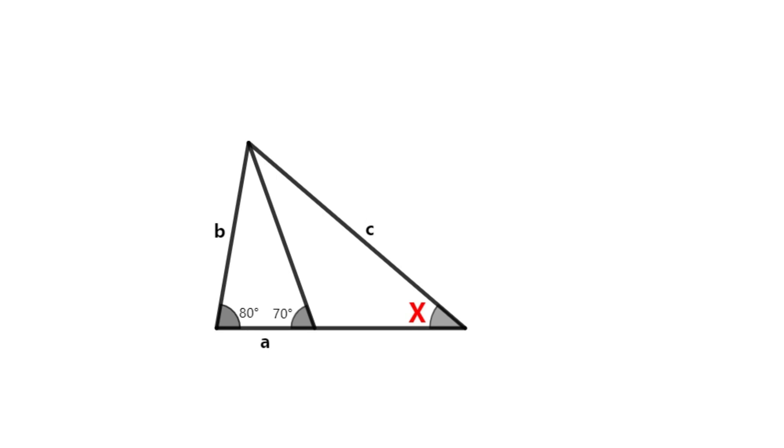In a triangle, an angle is 80 degrees. There's a segment inside the triangle. It forms a 70-degree angle. If segment A plus B is equal to C, what is the angle of angle X?